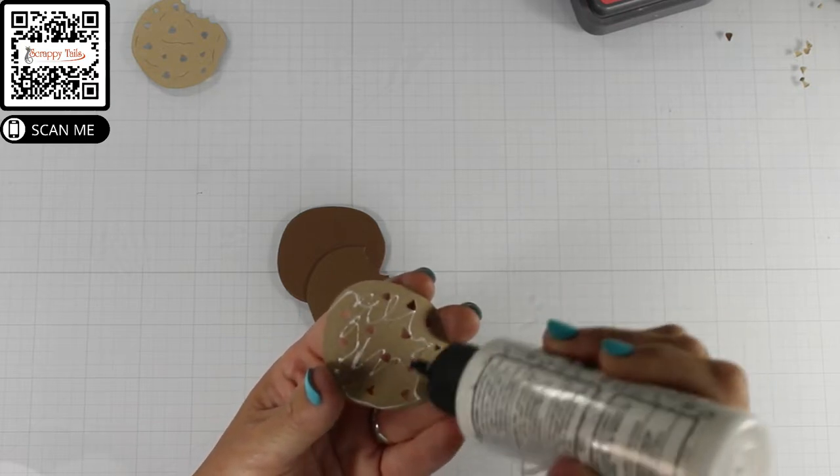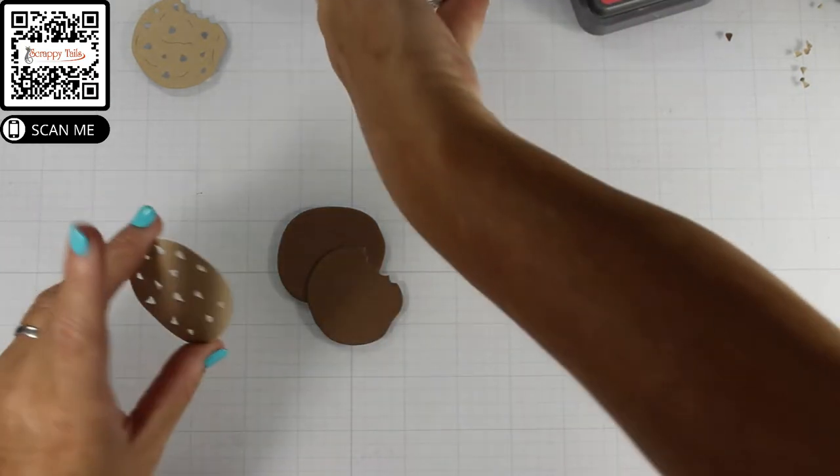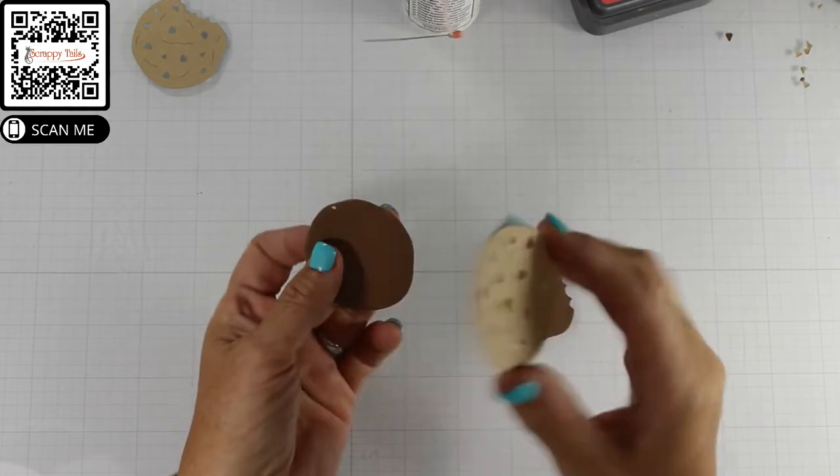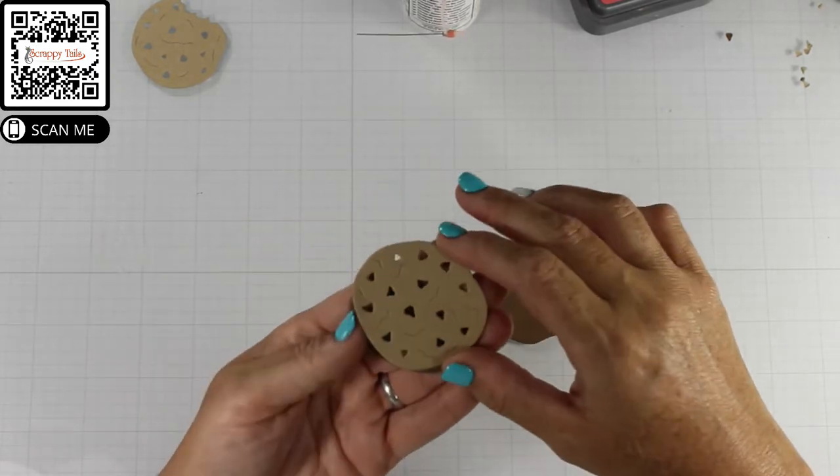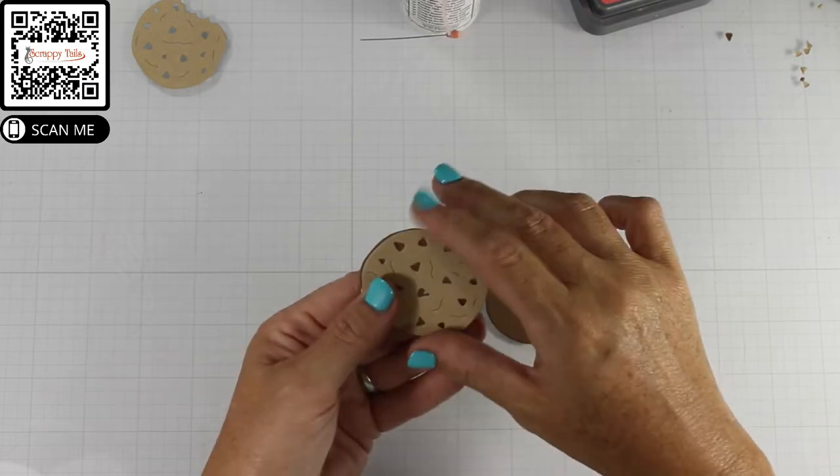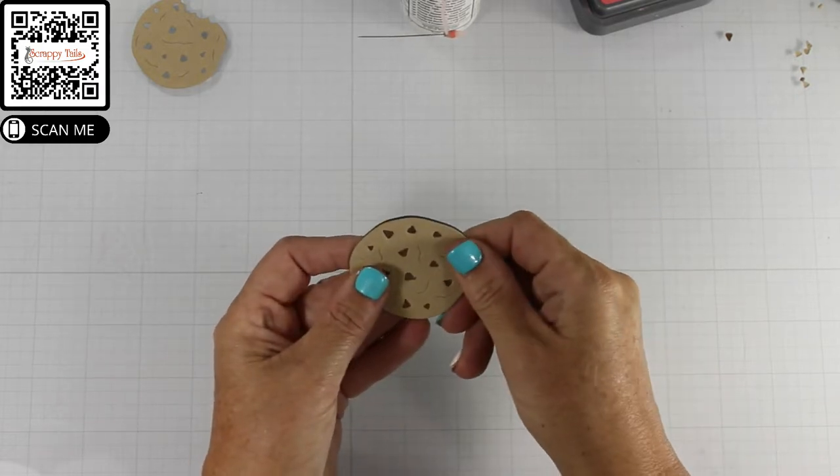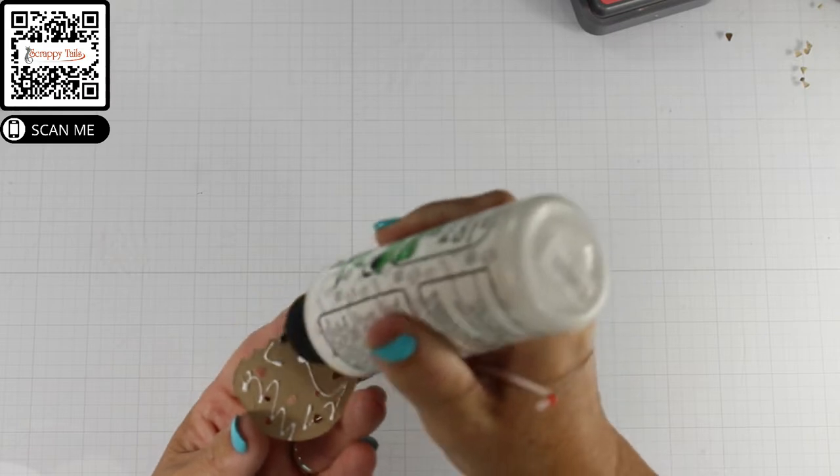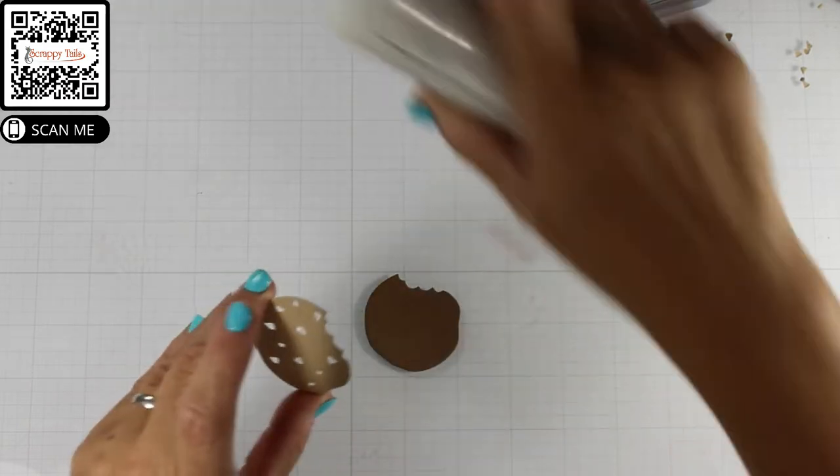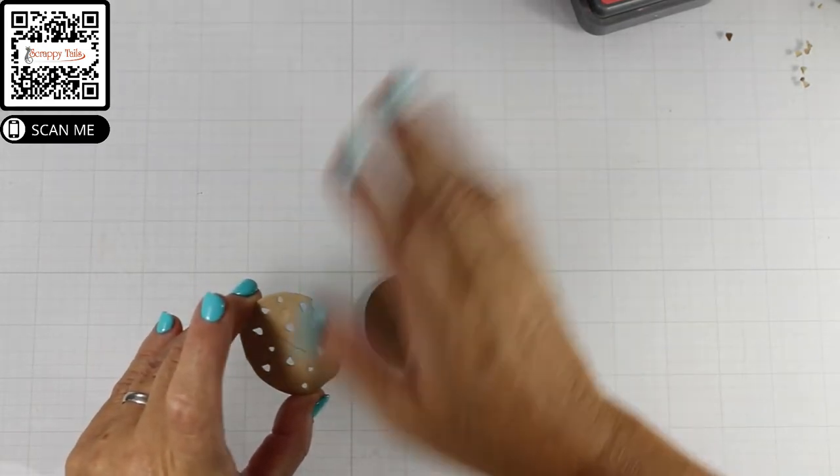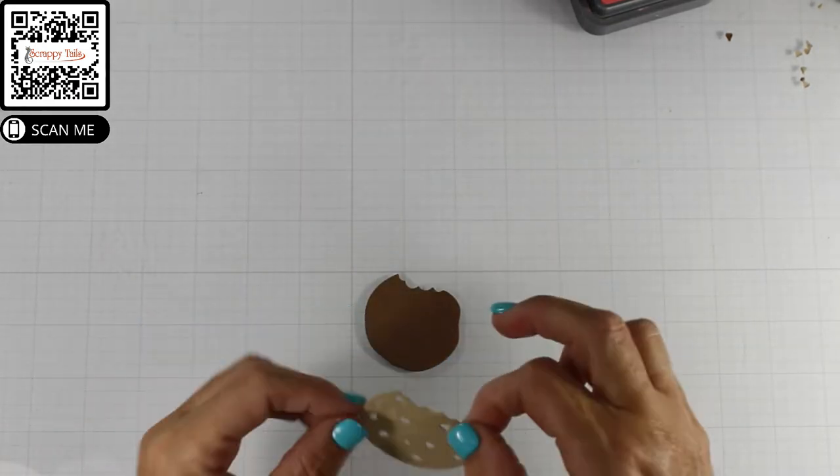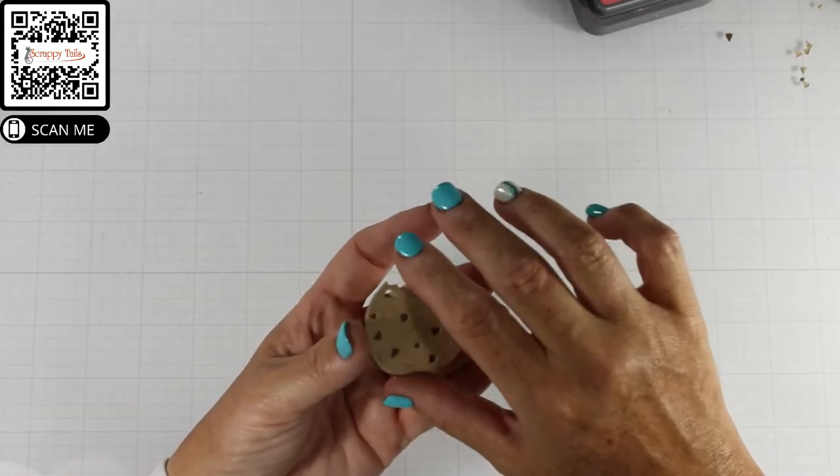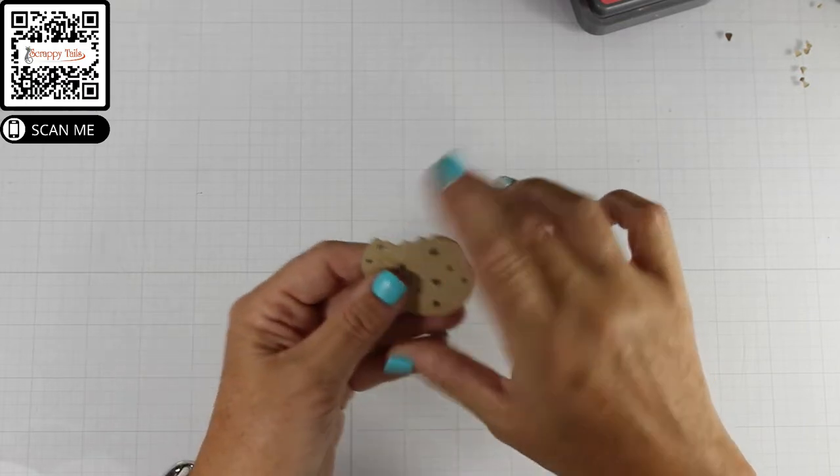So I broke out my Scrappy Tales products and got started. I did all of my die cutting off screen, but I used the dessert cookie macaroon and donut die set that came out earlier this year. I die cut the solid base in a dark brown and then the top part of the cookie with Kraft. That way the chocolate chips would be shining through. I did that with both the solid cookie and the one that had a bite taken out of it. I love that Sabrina gave us two different versions of the cookie to create this cute card.